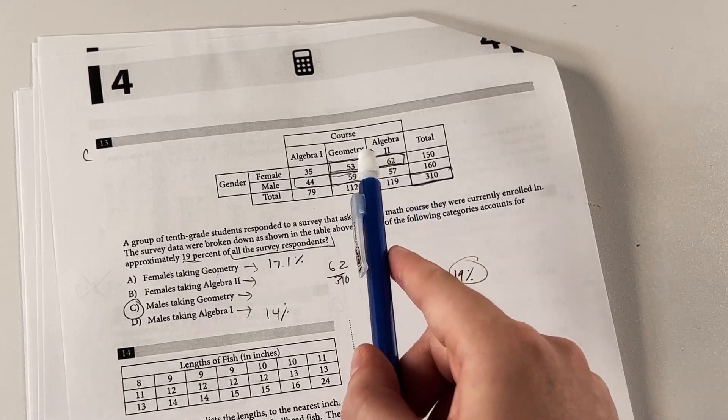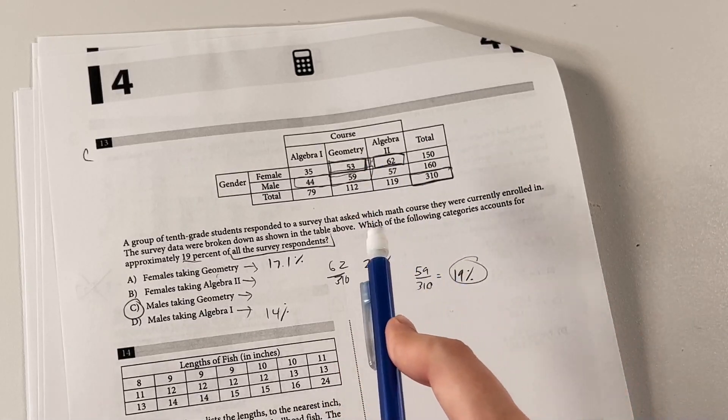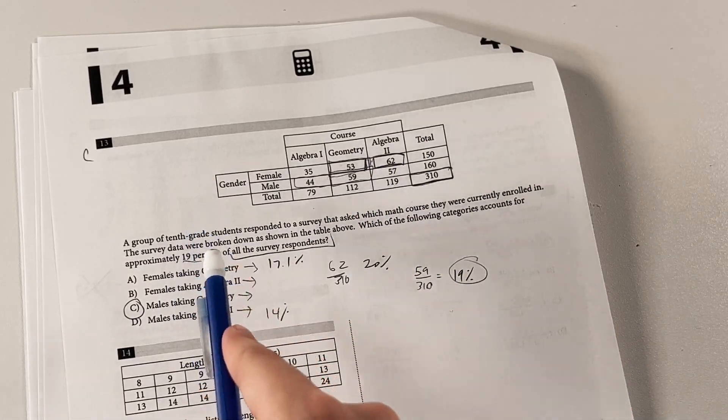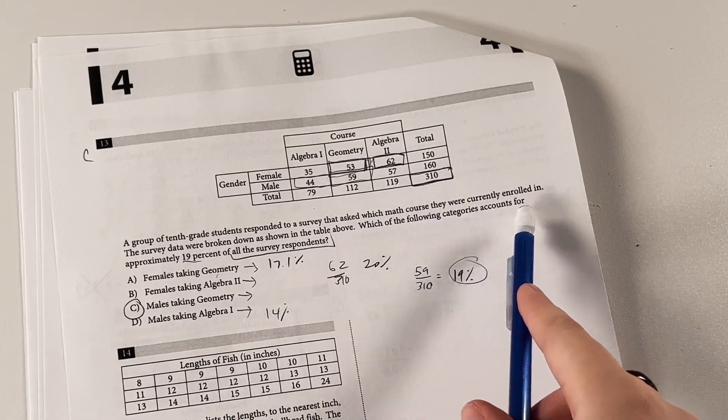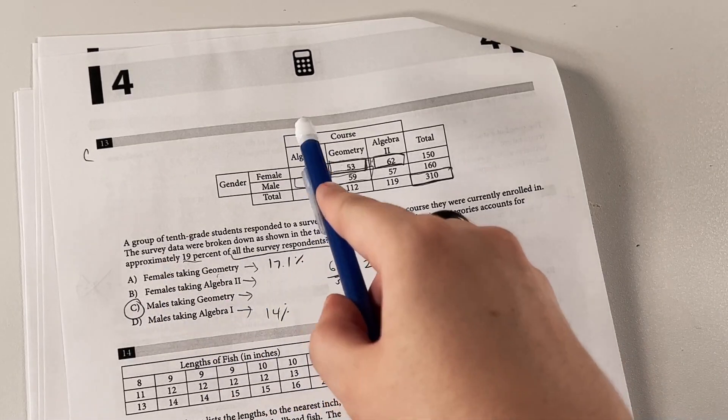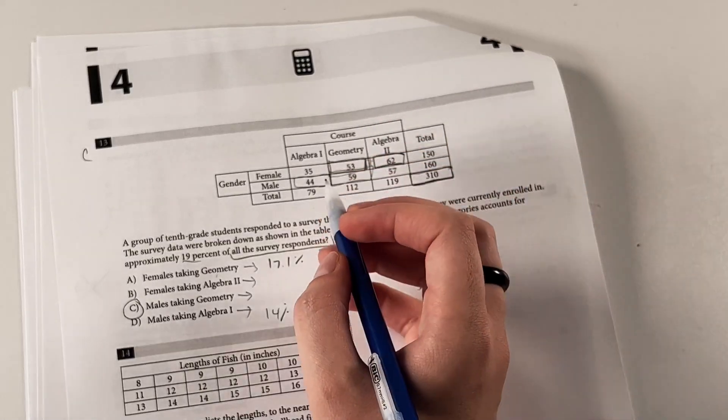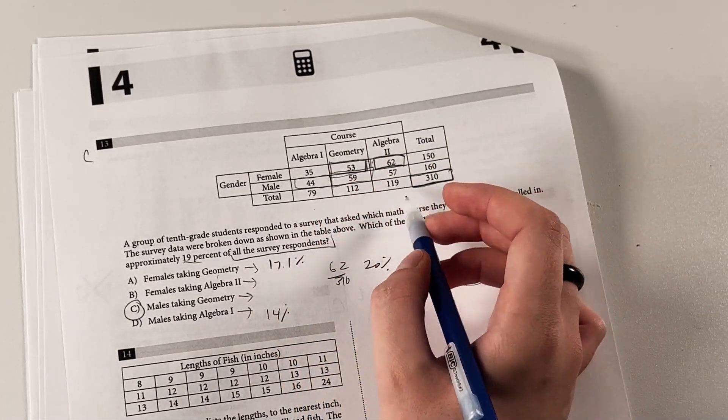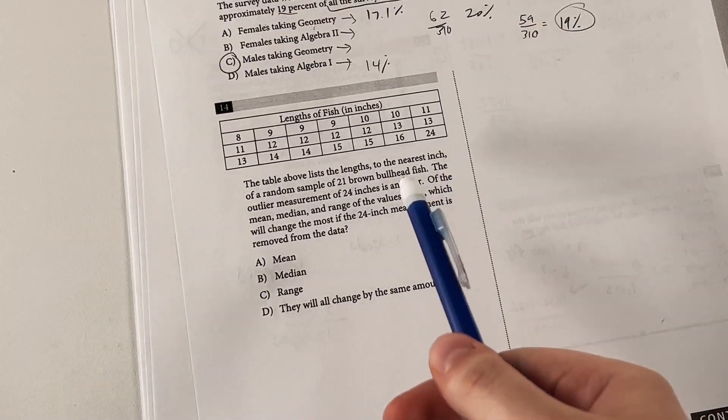To check this, I would just make sure you're dividing the right boxes by each other. So take a good look at what this question is actually asking always. Like maybe it'll say which of the categories accounts for 19% of all students taking algebra 1, something like that. And then you'd have to use this total here instead of the entire total. So it's always good to read that carefully.